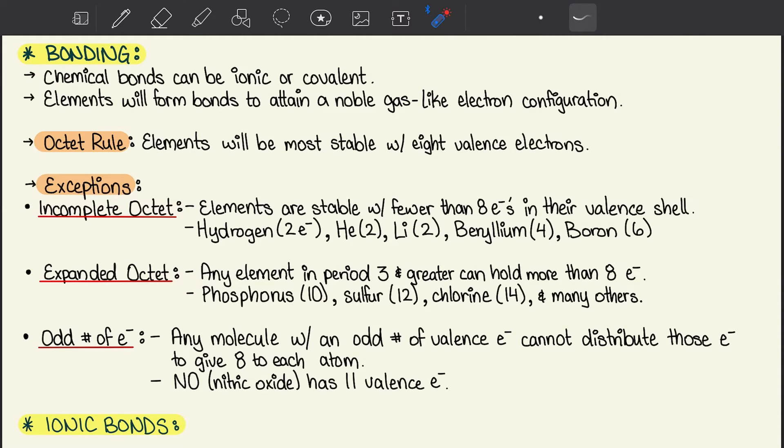The third exception is the odd number of electrons. Any molecule with an odd number of valence electrons cannot distribute those electrons to give 8 to each atom. So nitric oxide, NO, has 11 valence electrons. This subchapter is super important to understand because I have seen it come up in the MCAT before.